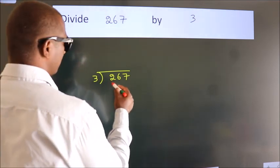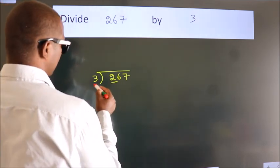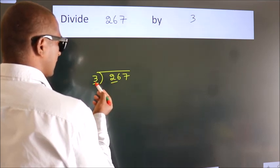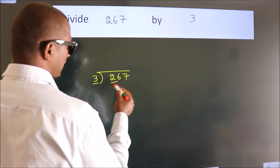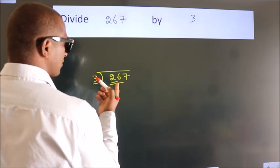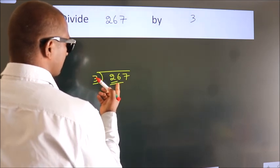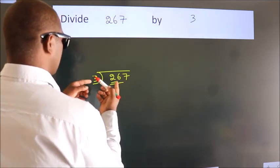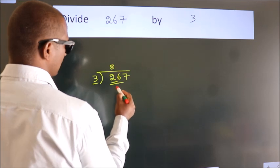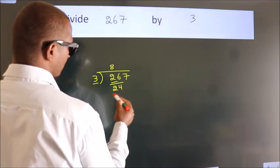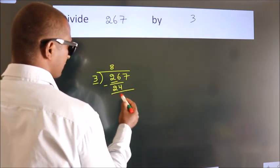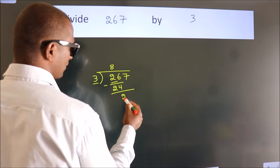Here we have 2, and here 3. 2 is smaller than 3, so we should take 2 numbers: 26. A number close to 26 in the 3 times table is 3 eights, 24. Now we should subtract — we get 2.